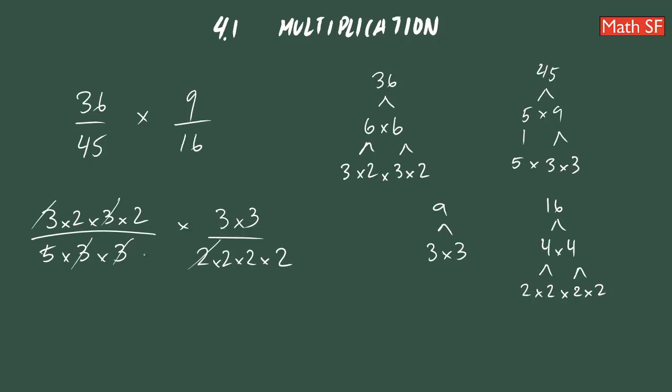this 2 is in the bottom and this 2 is on top. You can cancel them out. So here is a 2 and here is a 2. What else? Seems like nothing else.